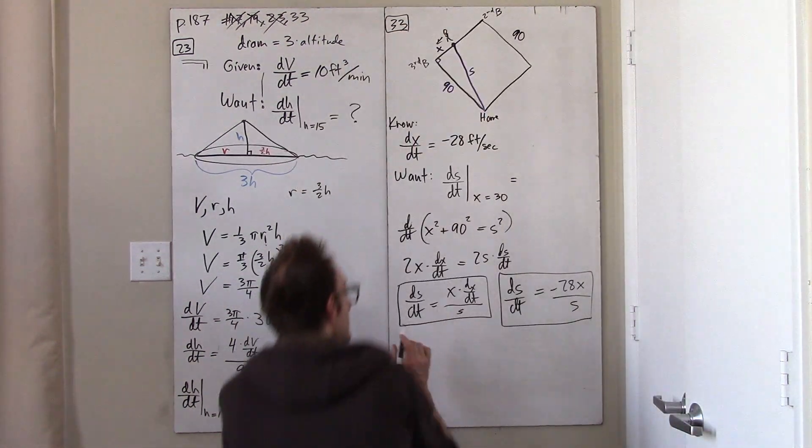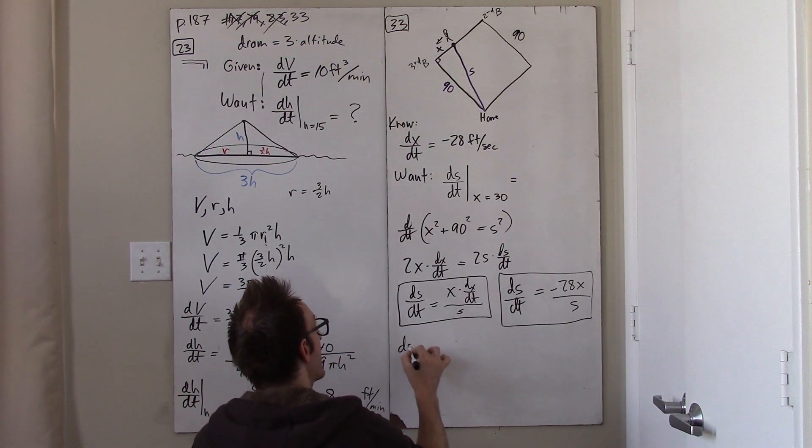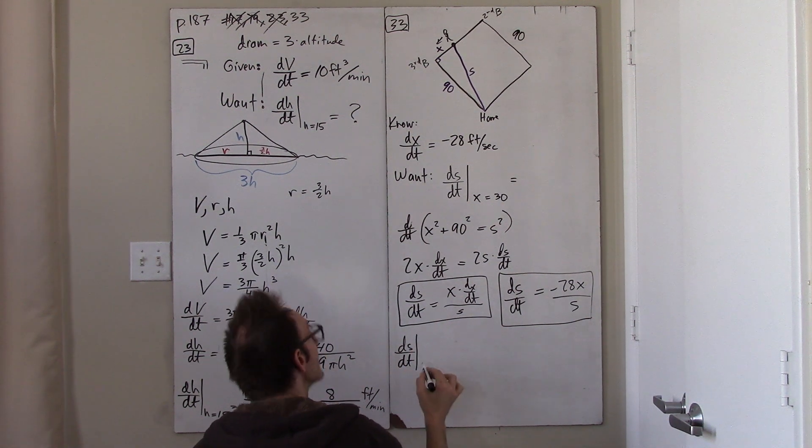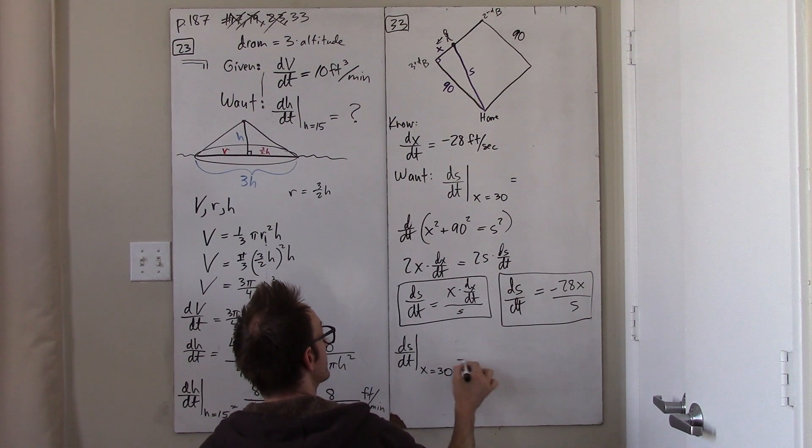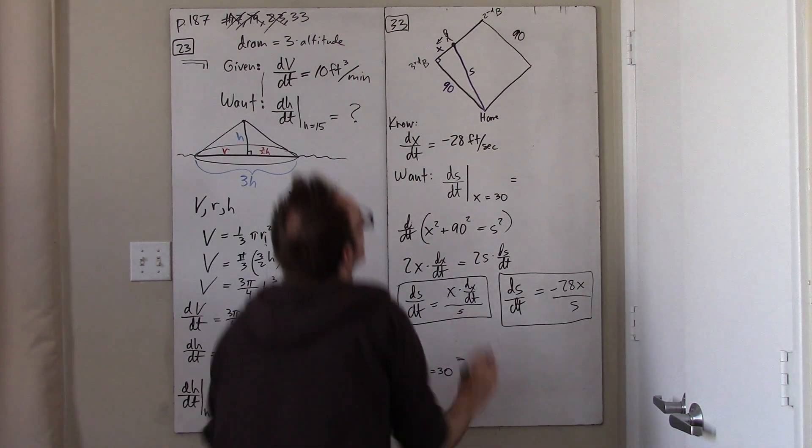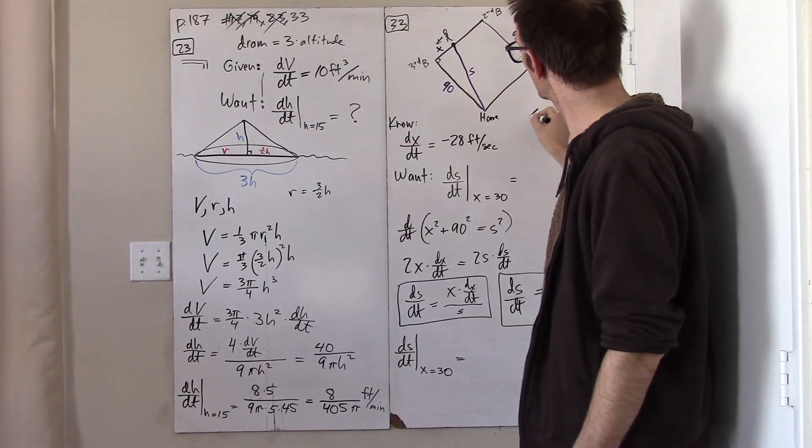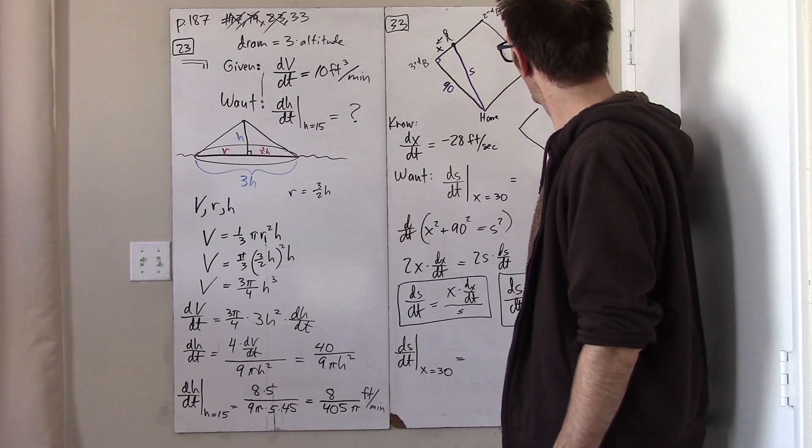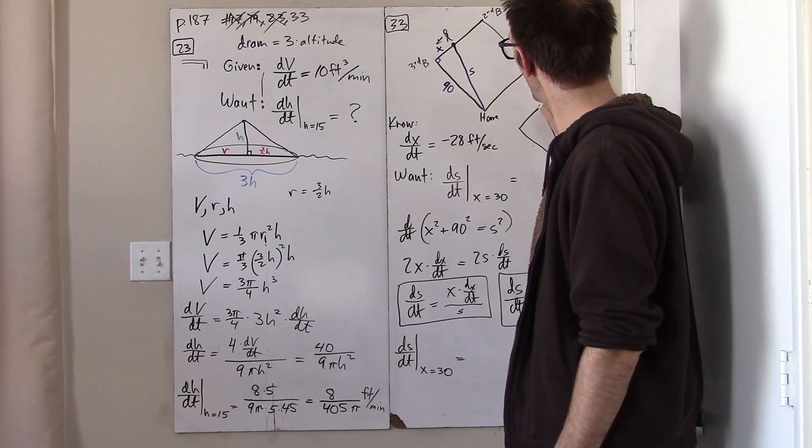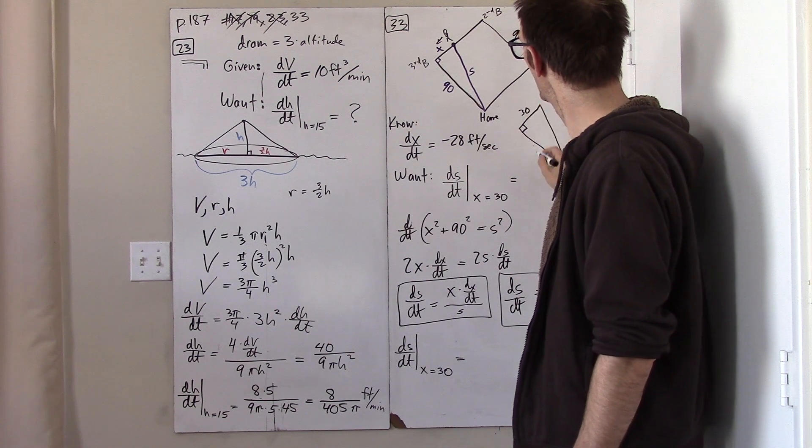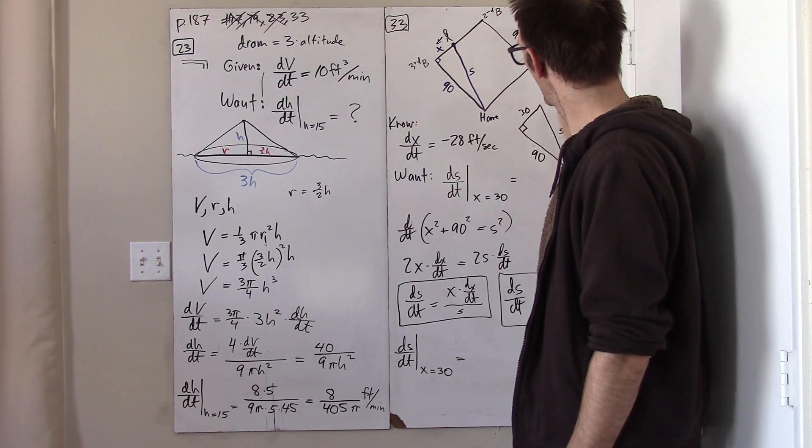And finally, to answer the question, I want to know what ds dt is at the particular moment at which x is 30. Well, that's kind of annoying because it means I need to do some more math. And what do I have here? Well, I have a triangle in which that's 30 and that's 90, and I want to know what s is.